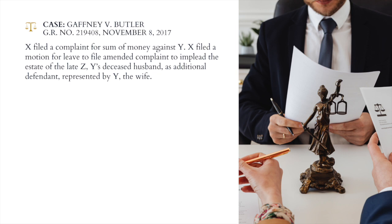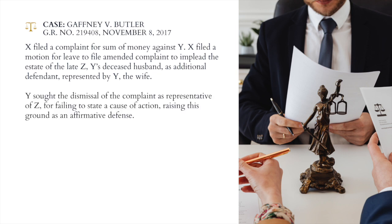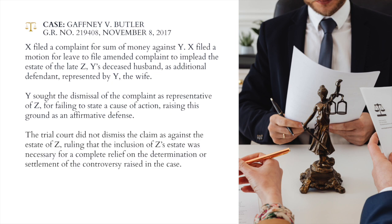Another case question. X filed a motion for leave to file an amended complaint to implead the estate of the late Z, Y's deceased husband, as additional defendant represented by Y, the wife. Y sought the dismissal of the complaint as representative of Z for failing to state a cause of action, raising this ground as an affirmative defense. The trial court did not dismiss the claim as against the estate of Z, ruling that the inclusion of Z's estate was necessary for a complete relief on the determination or settlement of the controversy raised in the case. Question: should the case against the estate of Z be dismissed?